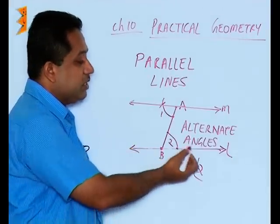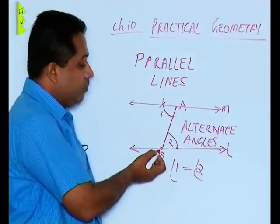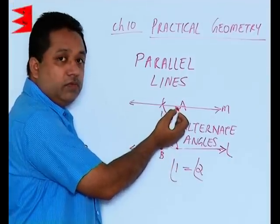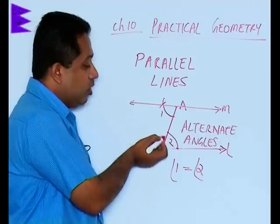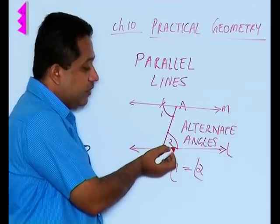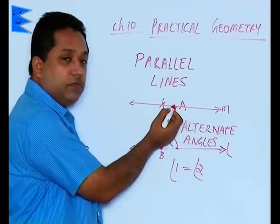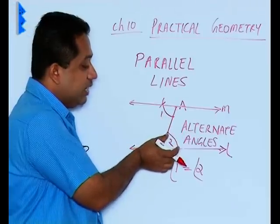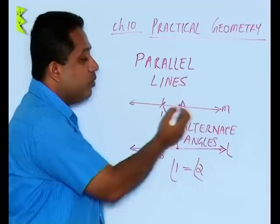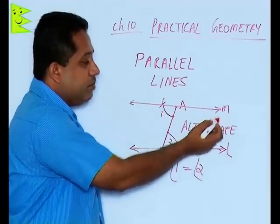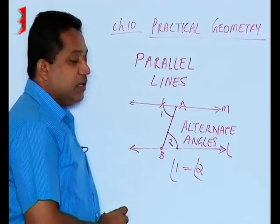So to draw parallel lines, the construction is very simple. We have taken a line L, taken any random point B, taken any random point A, and joined A to B. We have drawn an arc with any radius here. Using the same radius, we are drawing the arc from A. Then we are finding out the arc length. The same length we are cutting here and joining this point to A and extending it on both sides. So we get this line M parallel to the line L. This procedure can be used for drawing parallel lines.